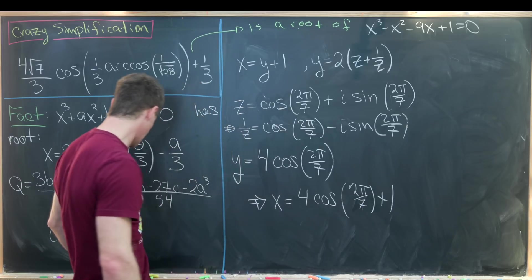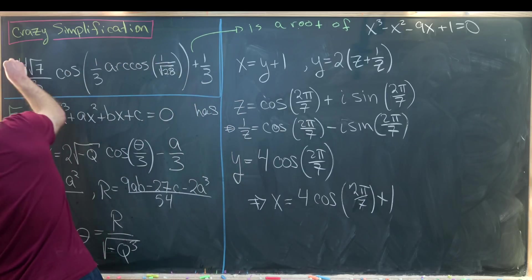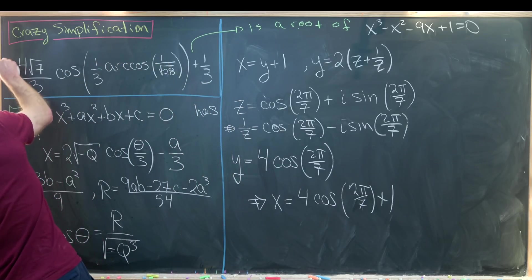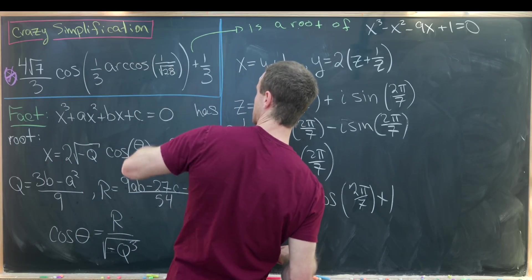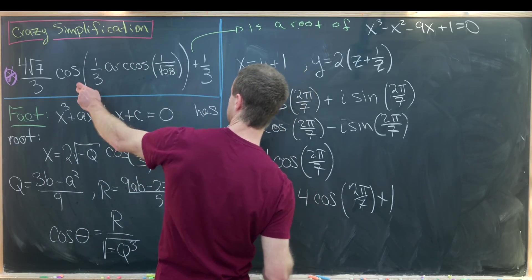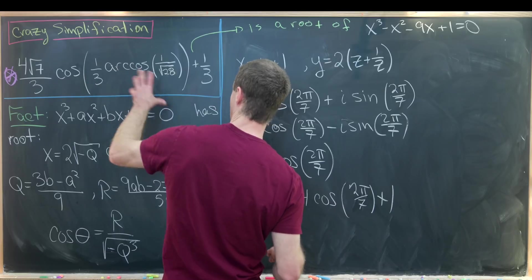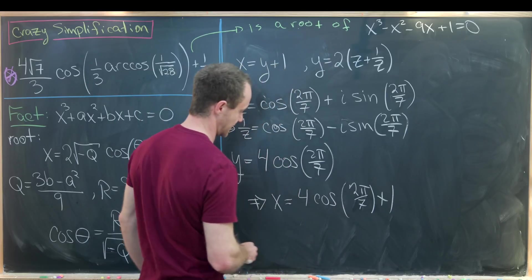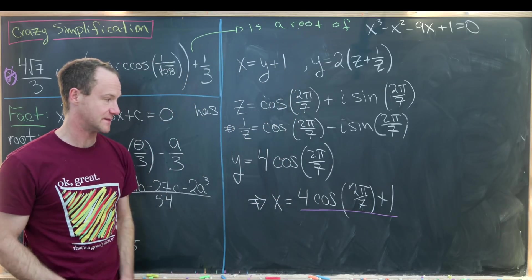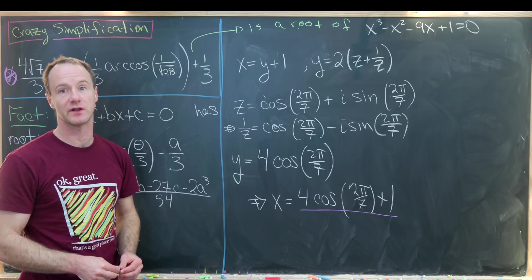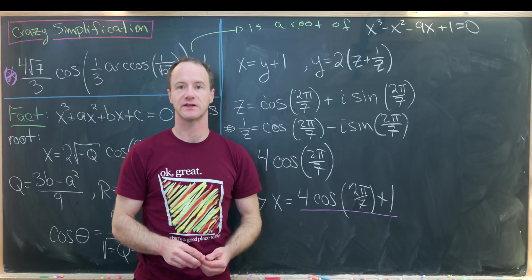Then our original substitution set x equal to y plus one, so x equals 4 times cosine of 2 pi over 7 plus one. And there we have our identity: the intricate number involving cosine and inverse cosine that we started with is actually equal to 4 times cosine of 2 pi over 7 plus one. And that's a good place to stop.